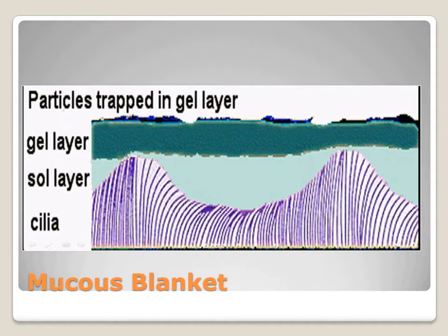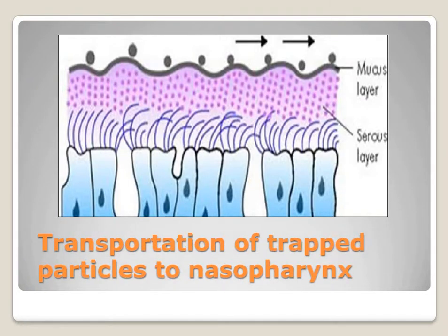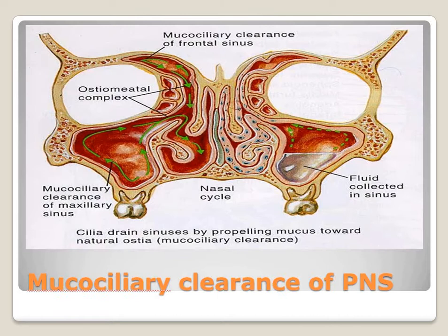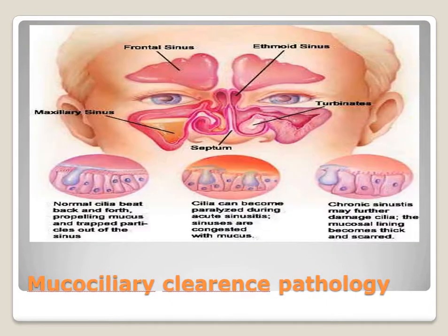Particles are trapped in the gel layer and transported into the nasopharynx. The cilia beat back and forth, moving the layer forward — this is mucociliary clearance. In the maxillary sinus and frontal sinus, cilia propel mucus and trapped particles out toward the ostia. Cilia can become paralyzed during acute sinusitis; chronic sinusitis may further damage the cilia, causing the mucosal lining to become thick and scarred.